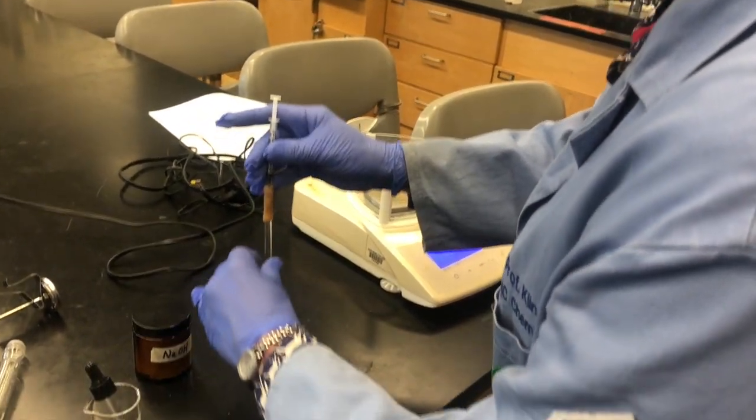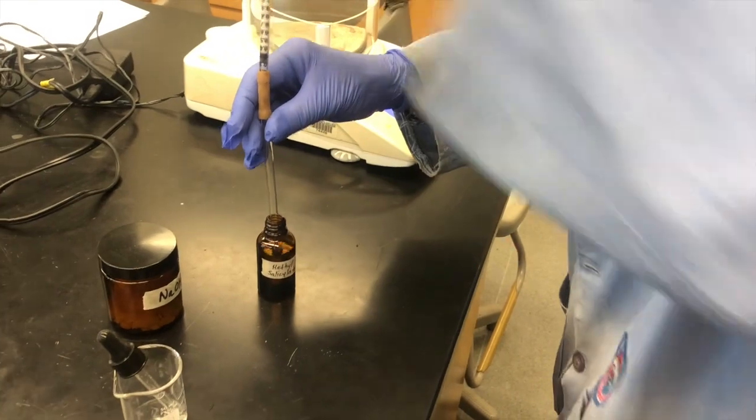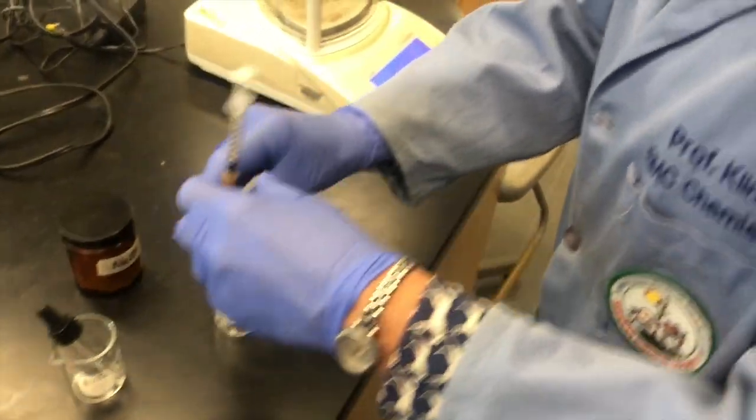Once we have about 0.2 mLs measured out on the syringe, we add that to our flask.